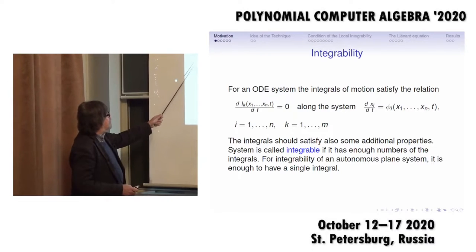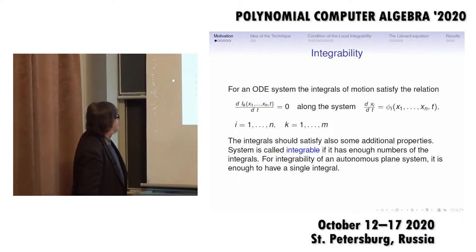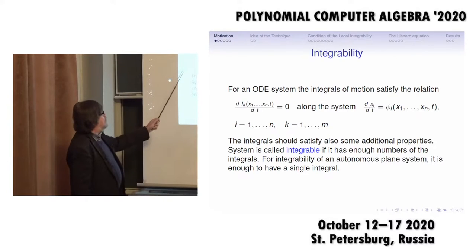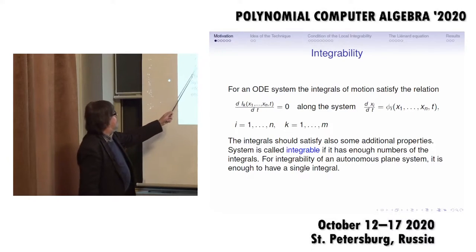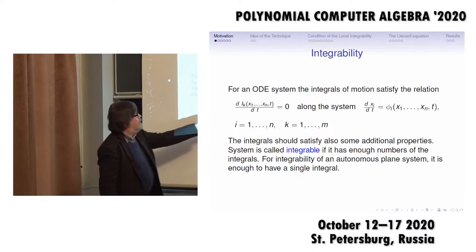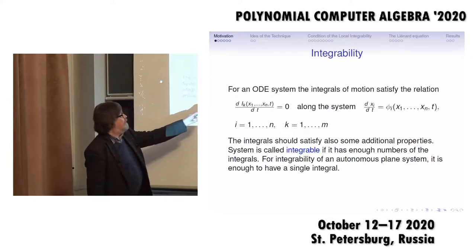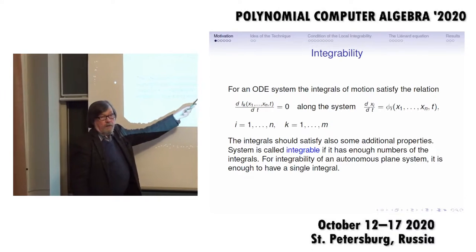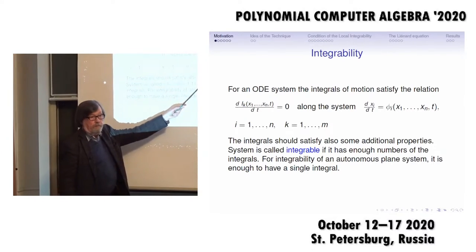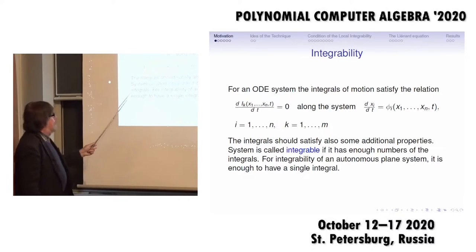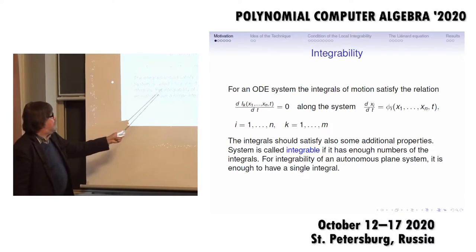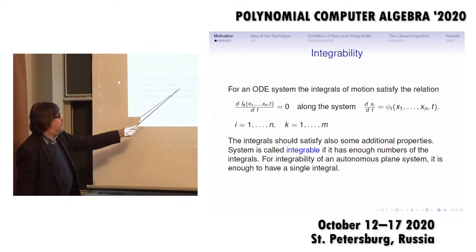The first integral of motion is a function which depends on the variables of the system, and this function is constant along the system's orbit.